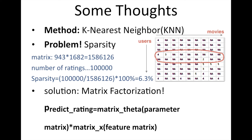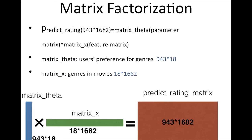The solution for this problem is matrix factorization. As we see, the predict rating matrix here is represented by a product of two matrices: the parameter matrix and the feature matrix. Matrix theta, which is the parameter matrix, represents users' preference for different genres. The dimensionality of it is the number of users times the number of genres. Matrix X, which is the feature matrix, represents genres in the movies. The dimensionality of it is the number of genres times the number of movies. Here's the diagram of this process.